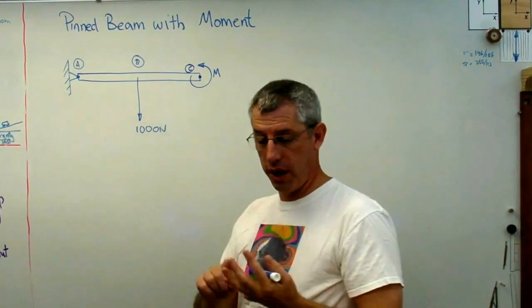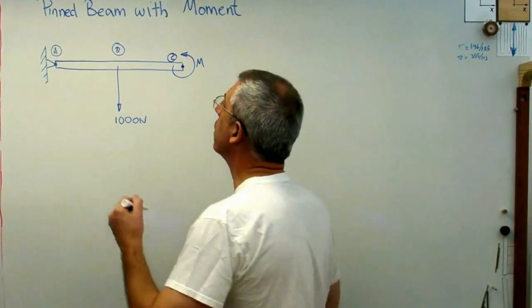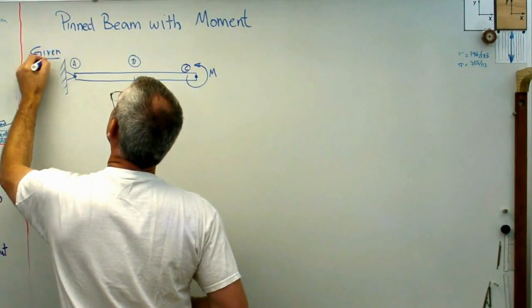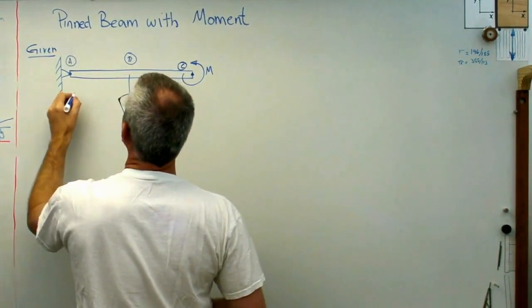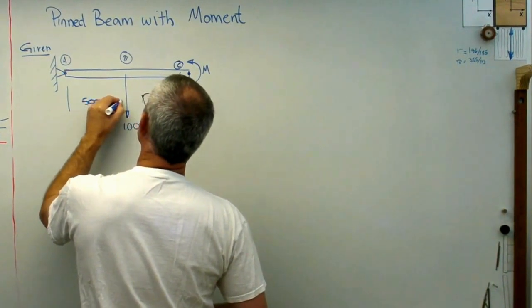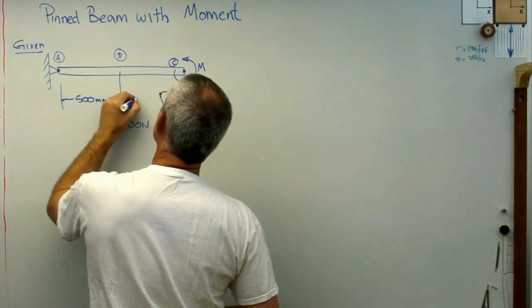So remember, given, find, solution, answer. That's the format we're going to use. So this is the given. This is all the information we've got. I'm going to give you some dimensions here. That's 500 millimeters, half a meter, and so is that.